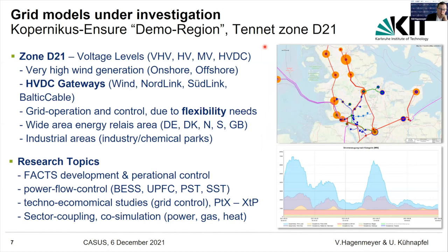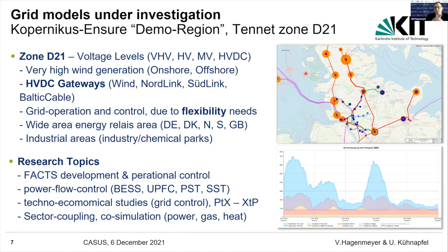There are different types of simulation on different time scales, because complexity would otherwise be too high. As a first insight into how digital twins are used: we are part of the Copernicus Ensure project, one of four national energy transition projects — Ensure deals with electrical grids. The Tenet Zone D21 is in the northern part of Germany, on the North Sea and Baltic Sea, including offshore wind power farms. The question is whether the energy from these wind farms can be used or must be discarded.